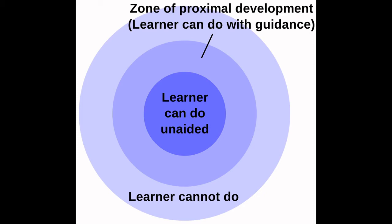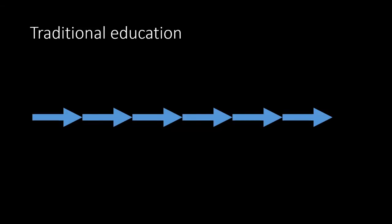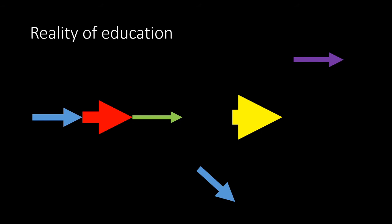I think about zones of proximal development both from a personal development perspective and a vocational or technical development perspective. Traditional education is often thought of as a linear process — you go to class, learn facts and figures, progress semester by semester. But in reality, education looks more like this: some topics are straightforward, some are harder, sometimes you blast through material, and sometimes you miss stuff. That linear education process is not necessarily the reality for a lot of people.